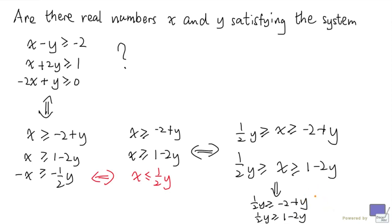I can also go backwards. If I have y that satisfy these inequalities, I can find a variable x that sits between one half y and minus 2 plus y, because one half y is at least minus 2 plus y, as well as one that sits between one half y and 1 minus 2y.